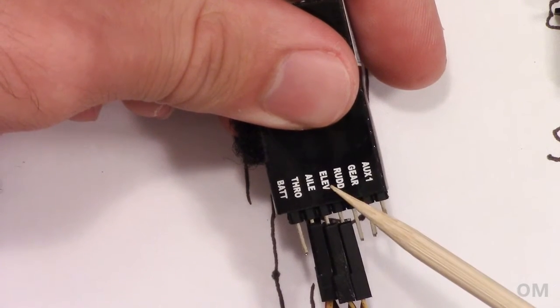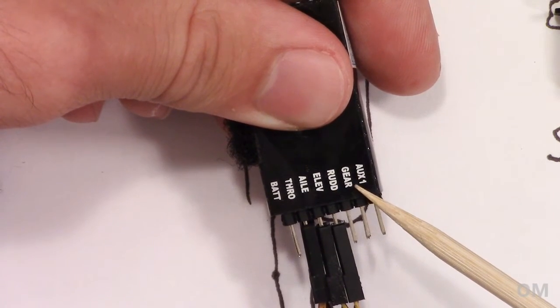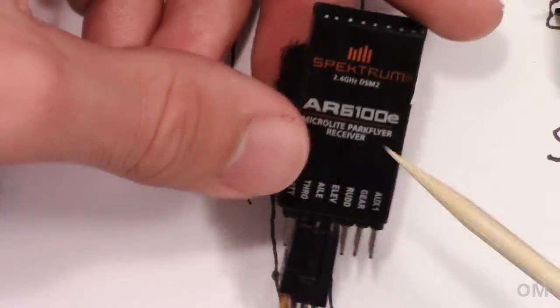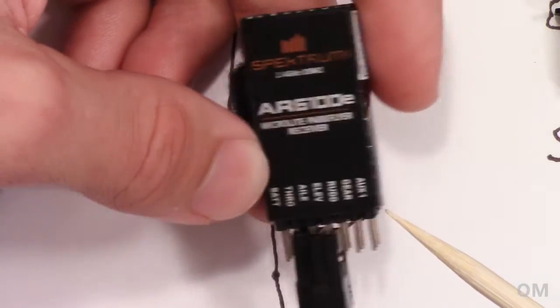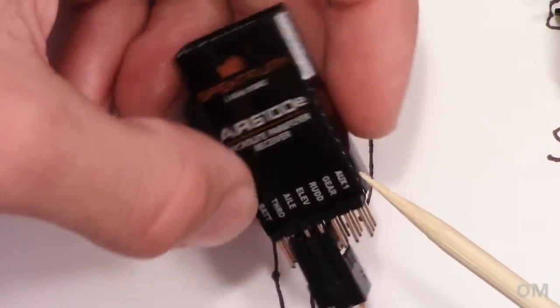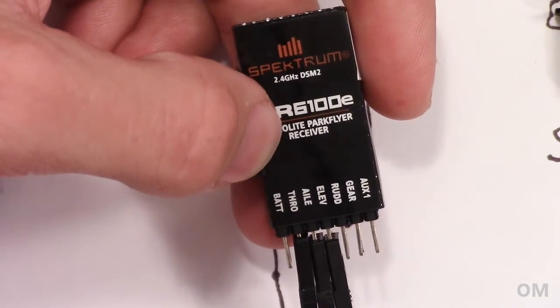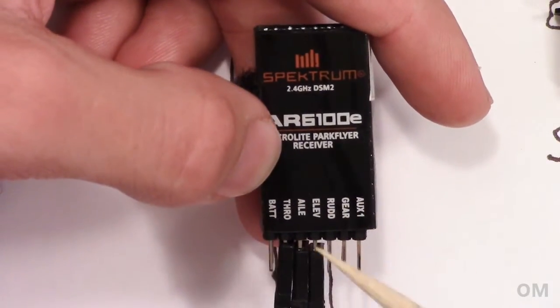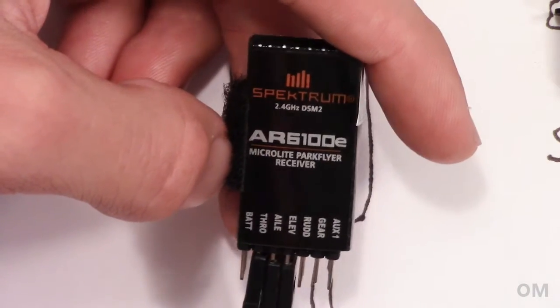And then all of these other guys are where you would hook up your servos and whatnot. So this is a good part right here to talk about the receiver a little bit and terminology. You might hear people talking about channel or channels, like oh it's a three channel airplane or a four channel airplane, etc. Each one of these little ports is considered a channel. So if something is a six channel receiver, it will have six ports like this little guy.